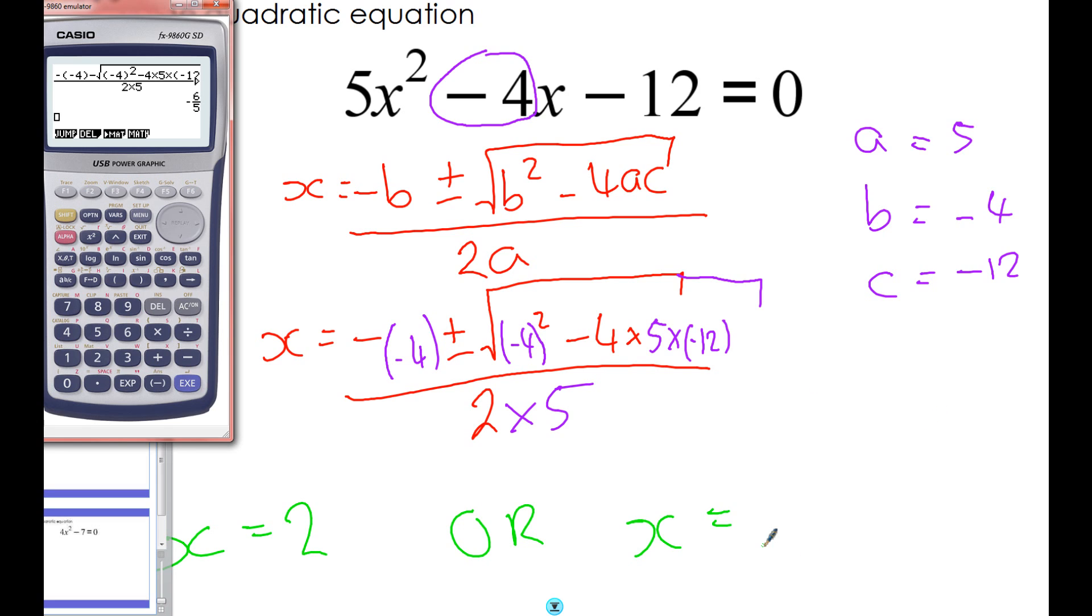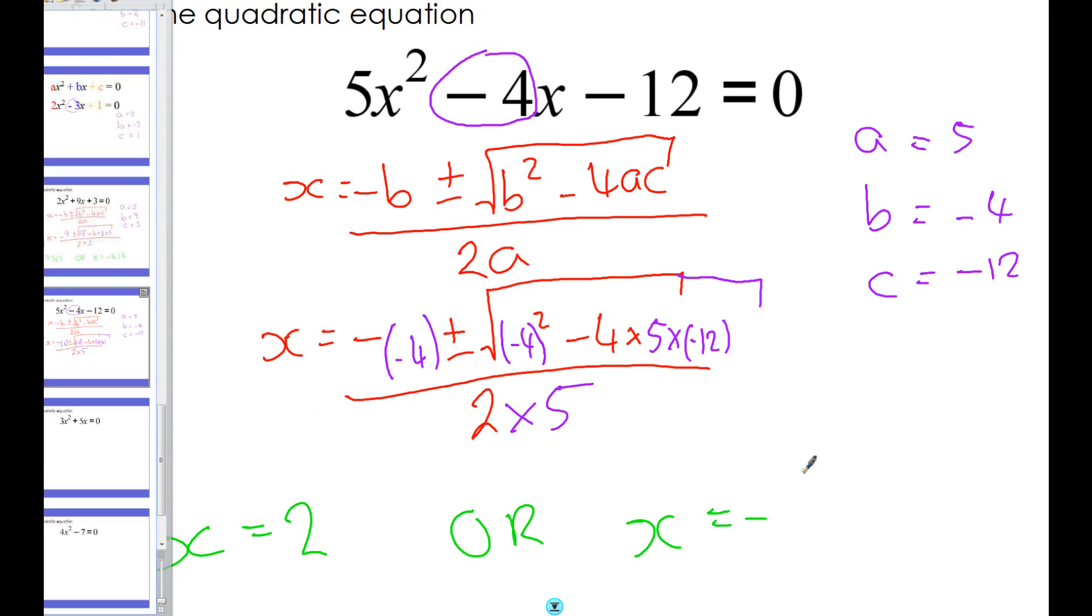Minus 6 fifths, or if you're asked to give that as a decimal, it would be -1.2.